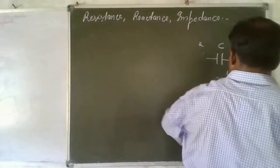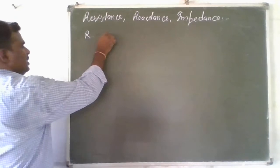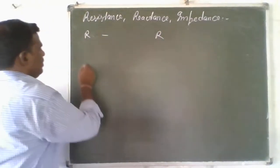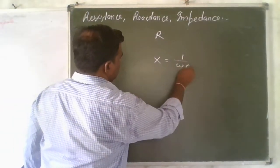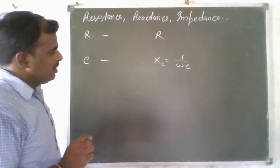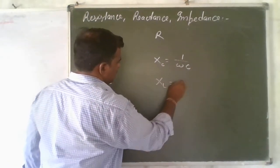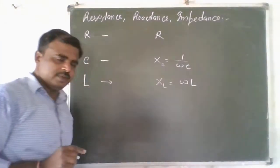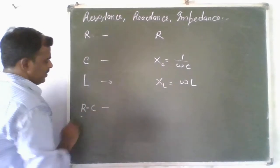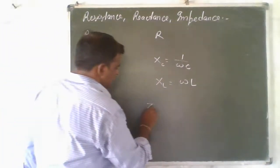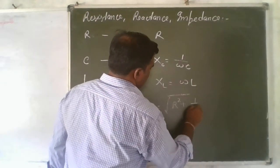Now for the values: in a resistance circuit, resistance is represented by R. For a capacitor circuit, the capacitive reactance is represented by Xc, equal to 1 upon omega C. If there is only an inductor, then the inductive reactance XL equals omega L, where omega is the angular frequency. If there is R and C — resistance and capacitor in series — then the impedance is the square root of R squared plus (1 upon omega C) squared.